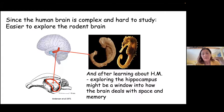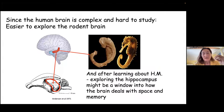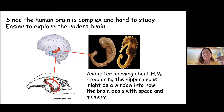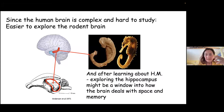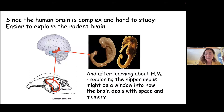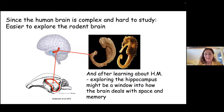When it happens, the signal travels from one cell to the next. The receiver cell has to accumulate positive charges inside its body to be able to send another electrical signal onward. Because the human brain is very complex and hard to study even with modern imaging techniques, it is still easier to explore the rodent brain. After learning about H.M. and his memory problems, going into the hippocampus to check how it deals with space and memory became quite an exciting task.